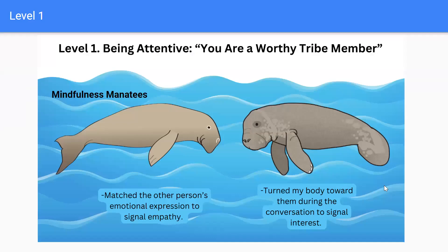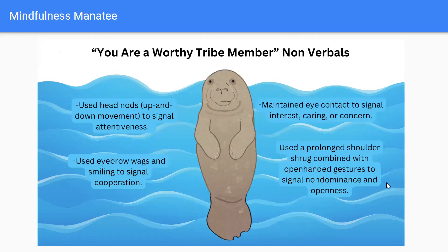Level 1: Being Attentive — 'You are a worthy tribe member.' When practicing, note if you matched the other person's emotional expression to signal empathy, turned your body towards them to signal interest, used head nods to signal attentiveness, used eyebrow wags and smiling to signal cooperation, maintained eye contact to signal interest, caring, or concern, or used a prolonged shoulder shrug combined with open-handed gestures to signal non-dominance and openness.